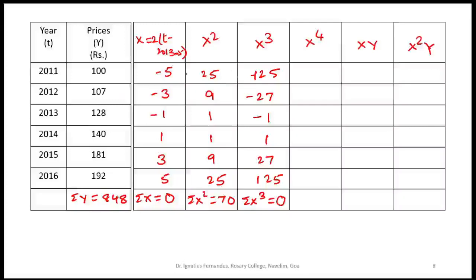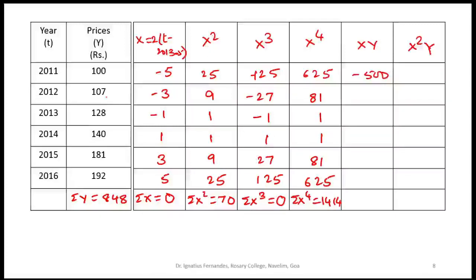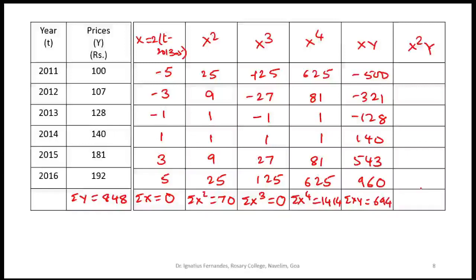For xy: 100(−5) = −500; 107(−3) = −321; 128(−1) = −128; 140(1) = 140; 181(3) = 543; 192(5) = 960. So summation(xy) = 694. For x²y: 100(25) = 2500; 107(9) = 963; 128(1) = 128; 140(1) = 140; 181(9) = 1629; 192(25) = 4800. So summation(x²y) = 10160.